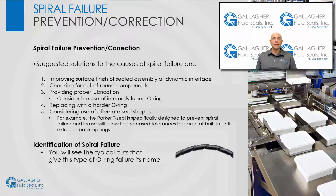T-seals are available to fit a number of standard AS568 O-ring grooves and may directly interchange with O-rings in most cases. To identify spiral failure, it's common to see the cuts that gave this type of O-ring failure its name.